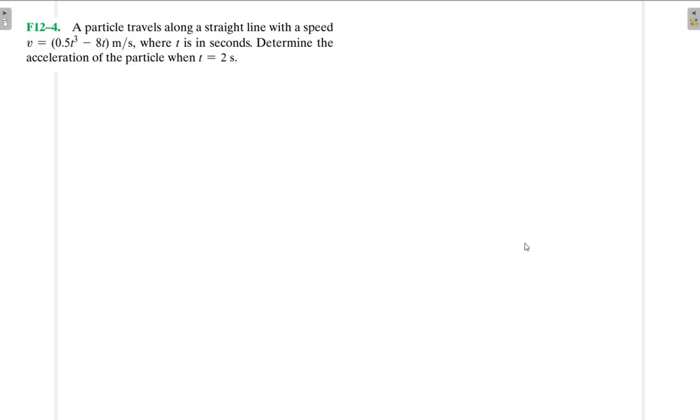Hello, I welcome you all to this another interesting screencast. We're going to be solving this engineering mechanics problem. It reads: the particle travels along a straight line with the speed v equals 0.5t cubed minus 8t.